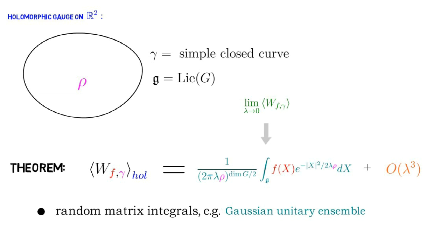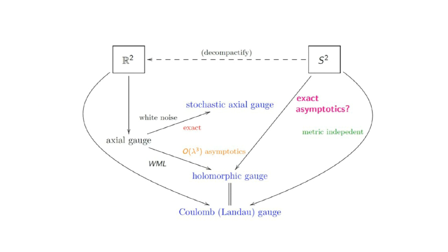The proof of this result involves exploiting homotopy invariance properties of iterated integrals occurring in the Feynman diagrammatic expansion in holomorphic gauge. Returning to our diagram, this yields the O(λ³) result.